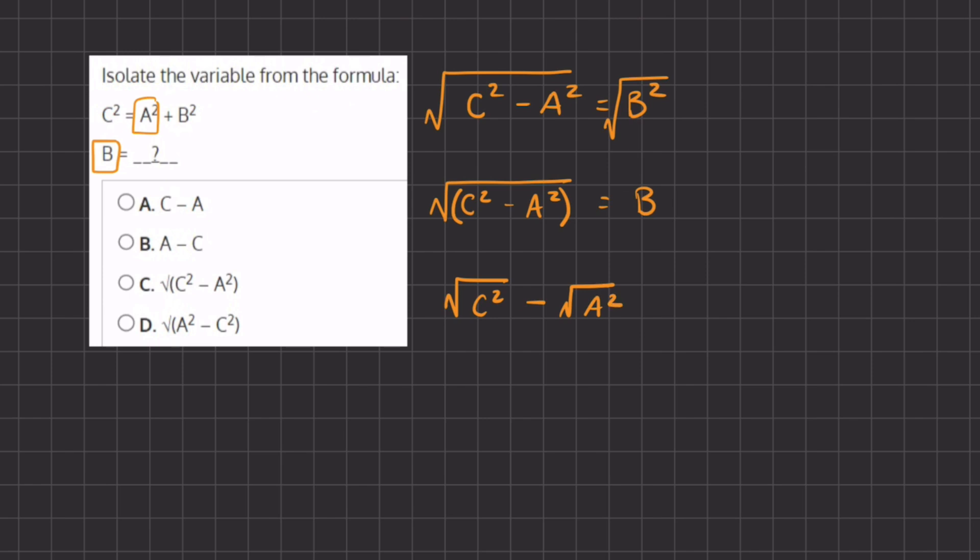That is incorrect and therefore the square root will stay on the entire expression. Therefore, the answer for the isolated version of b is going to be the square root of c squared minus a squared, which is answer c in this problem.